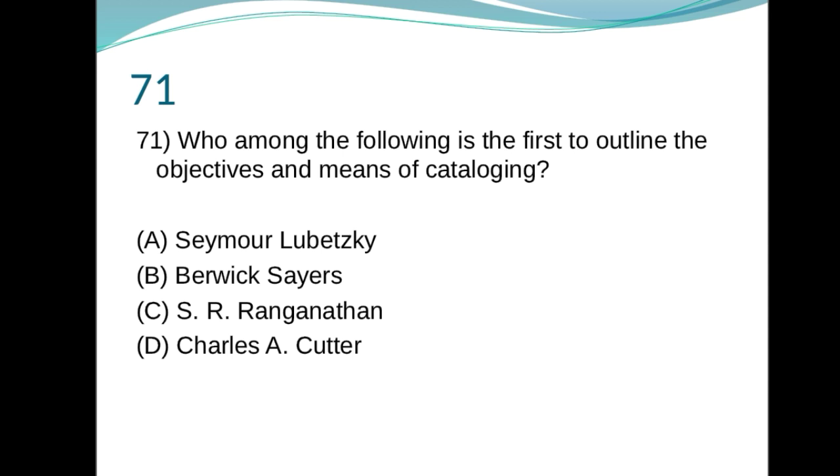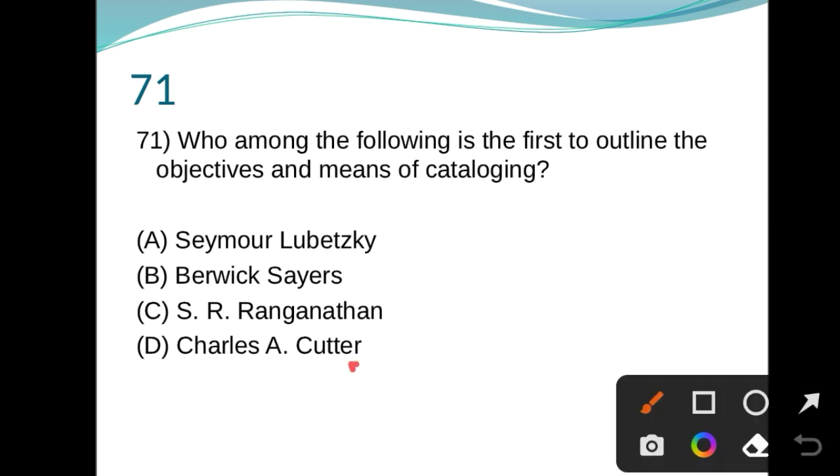71. Who among these is the first to outline the objectives and means of cataloging? Seymour Lubetzky, Barack, SR Ranganathan, Charles Ammi Cutter. D is right answer.